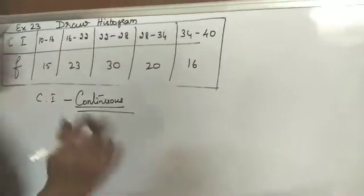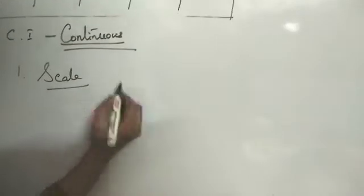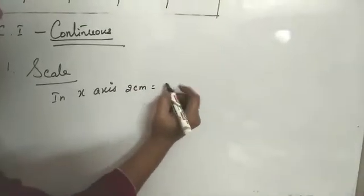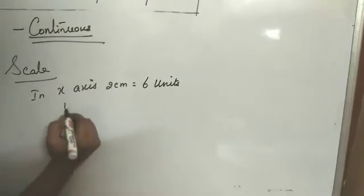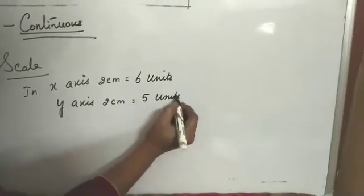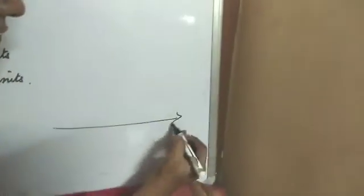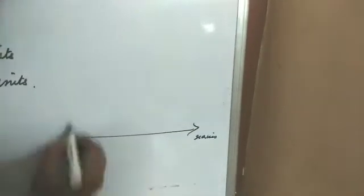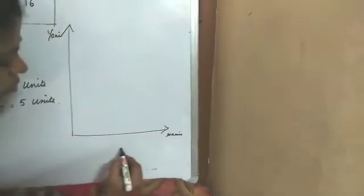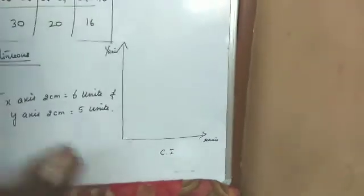So very simple, what we have to do. First you have to take the graph sheet, write the scale. In x-axis 2 centimeter is equal to 6 units and y-axis 2 centimeter is equal to 5 units. Then draw the x-axis and y-axis.